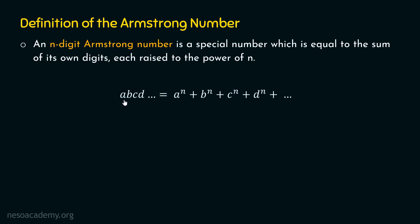If we have a number with digits a, b, c, d and so on, and we want to say it is an Armstrong number, then it must equal a to the power n, plus b to the power n, plus c to the power n, plus d to the power n, and so on. I hope it is clear what an n-digit Armstrong number is.